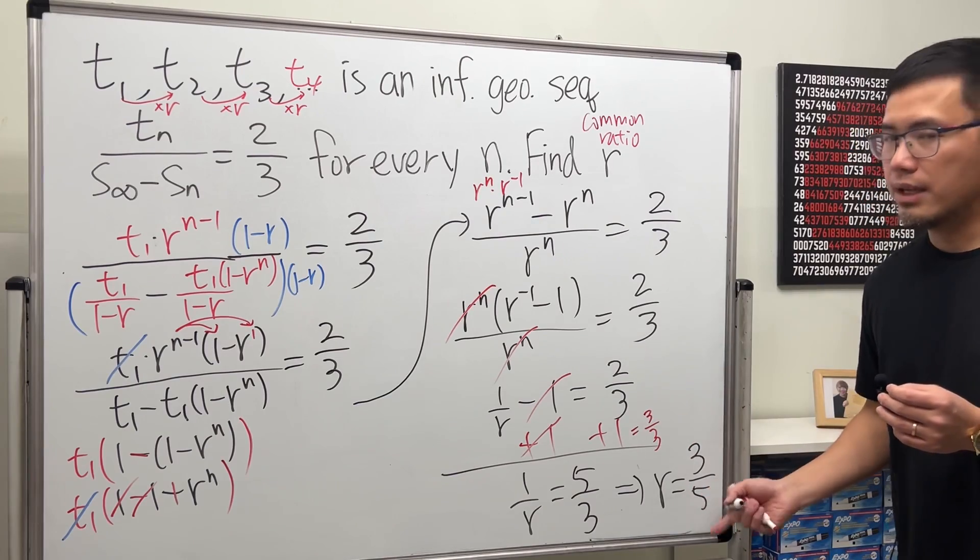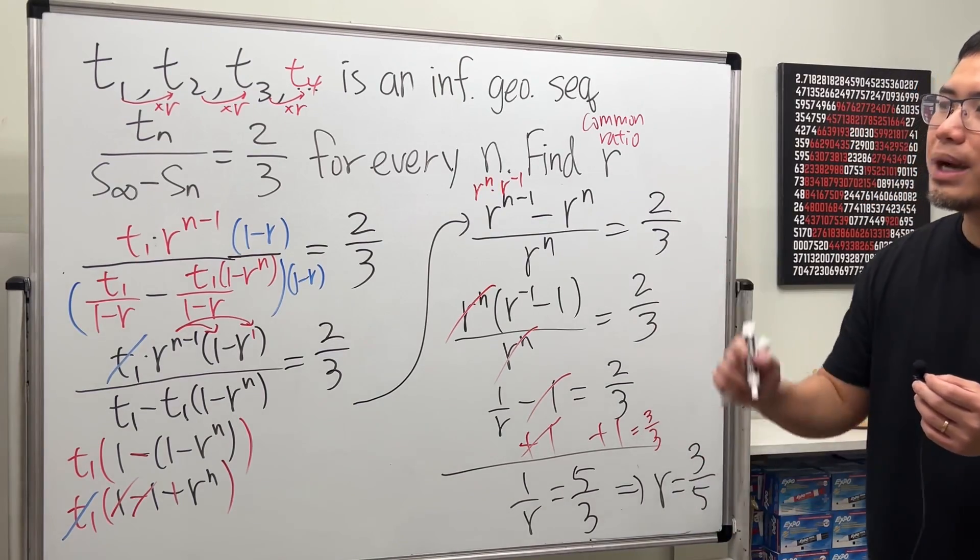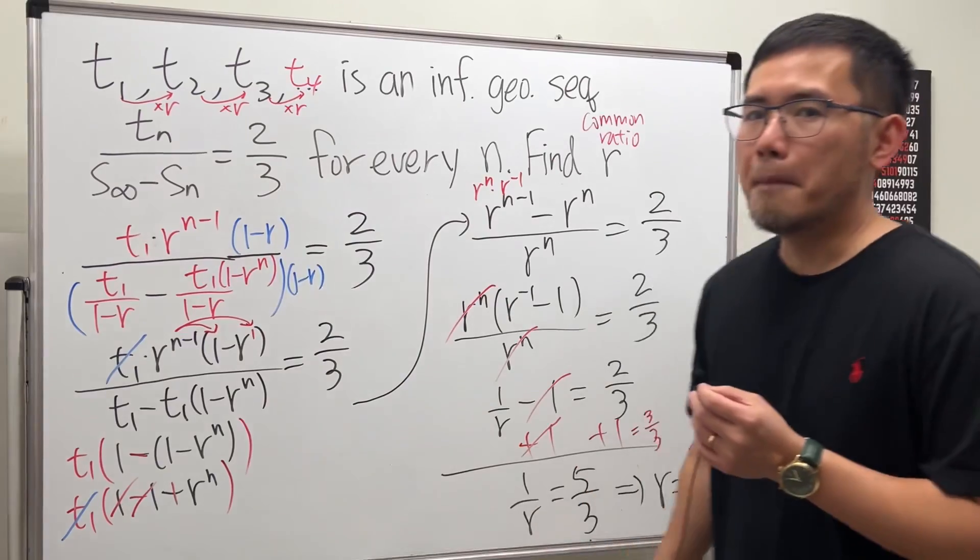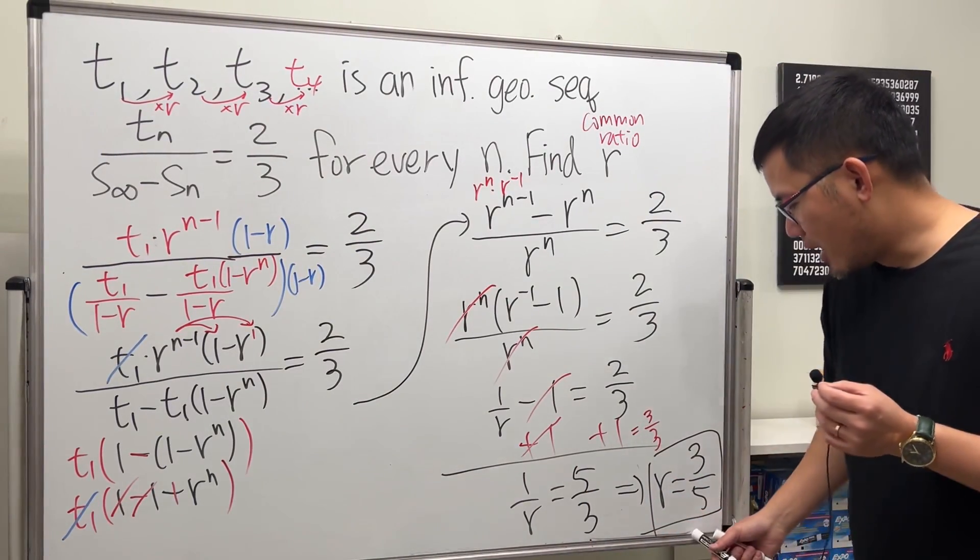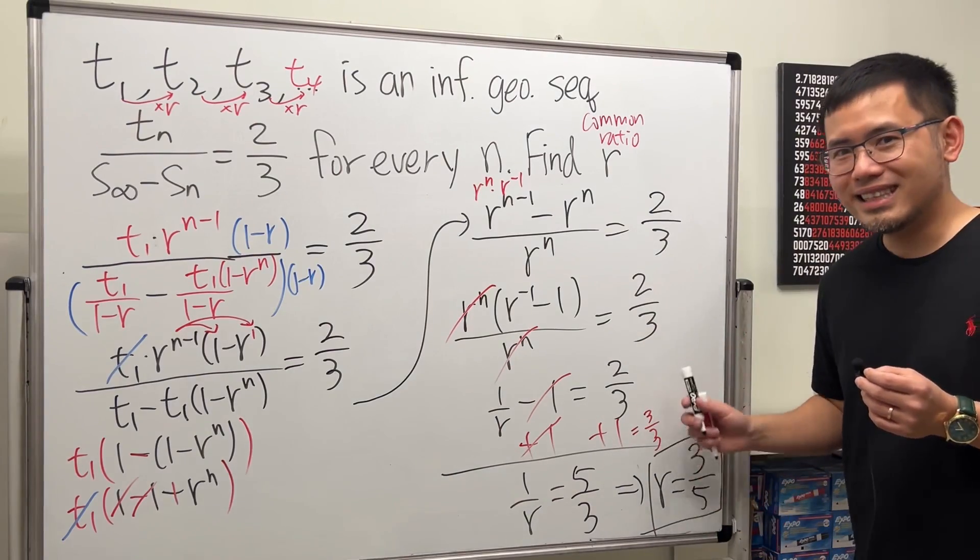Is this absolute value less than 1? Yes. That's why the s infinity makes sense. So here we have it. r equals 3 over 5. And that's all for the question. That's it.